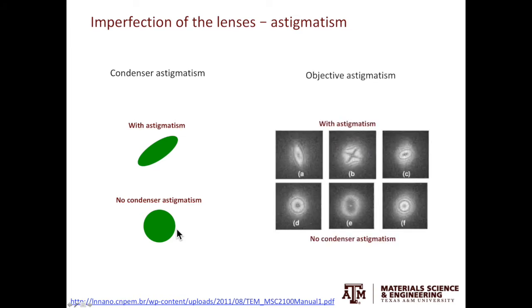The second type of astigmatism that you can correct is called the objective astigmatism. In most cases, if you are taking images at relatively low magnification, you don't have to worry about the objective astigmatism. Objective astigmatism becomes important when you are taking images at higher magnifications, especially when you try to take the hi-res images to show the lattice fringes.